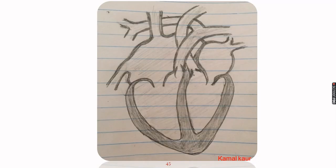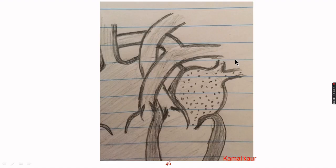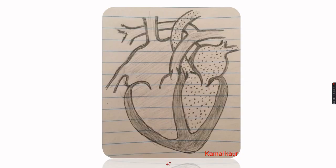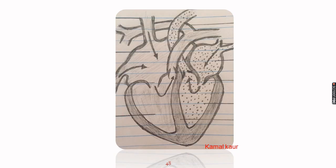We know that the right side and left side of the heart have different types of blood — the right side has deoxygenated and the left side has oxygenated blood. To differentiate between these two halves, we will put dots on the left side to show oxygenated blood: dots in the pulmonary vein, then left atrium, left ventricle, and aorta. This half of the heart has oxygenated blood.